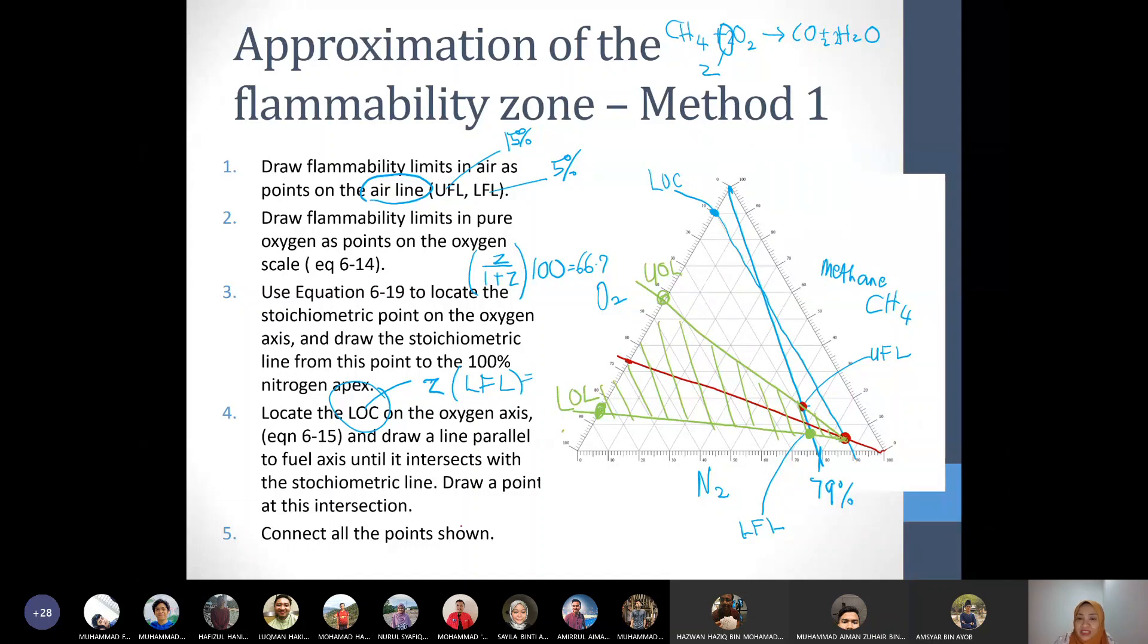If you are given a mixture, let's say 70% methane in 20% oxygen, you can find out. Let's say 80% and 20%. So you have this point here. That means this point is not flammable because it's outside of that region. Something like that.